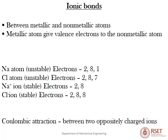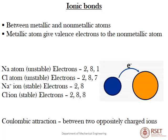The first primary bond is the ionic bond, formed between metallic and non-metallic atoms. The metallic atom gives valence electrons to the non-metallic atom. For example, sodium has one excess electron making it unstable, while chlorine requires one electron in its third shell to become stable. The electropositive sodium donates the electron to the electronegative chlorine, forming stable ions with Coulombic attraction between two oppositely charged ions — electron transfer from sodium to chlorine.